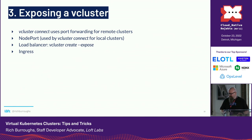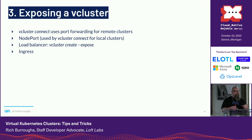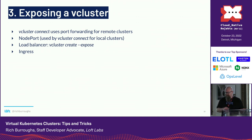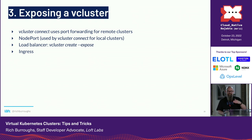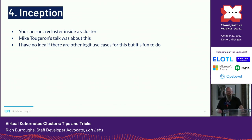Number three: exposing a vCluster — making it so people can connect to it. vClusterConnect is what you use if you're not already connected. When you do create, it connects you automatically, but you can also run vClusterConnect. For remote clusters, it uses port forwarding automatically. You can also set up a node port service — for local clusters like Docker Desktop, it just sets up a node port with no port forwarding needed. You can use a load balancer with the double-dash expose flag, or you can use an ingress. There's a good page in the docs with 'exposing' in the title.